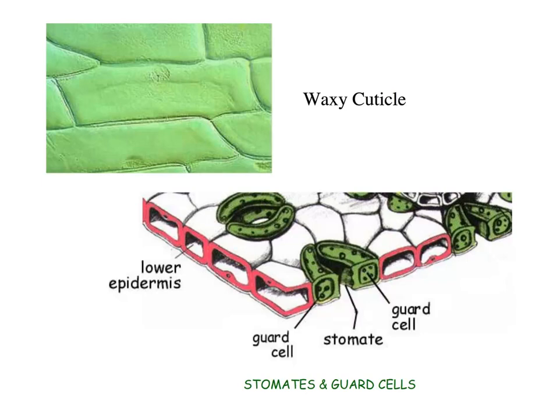Plants still have to exchange gases, and this is where their stomata and guard cells come in. Guard cells open and close, and stomata are the holes that allow for gas exchange between plants and the environment. This is what allows them to photosynthesize because they have to pull CO2 in and then get rid of their waste — which is oxygen — which we're quite fond of.